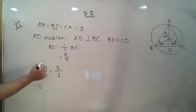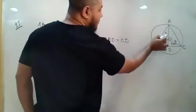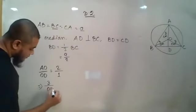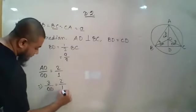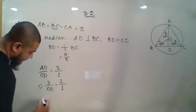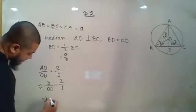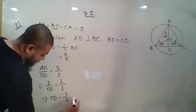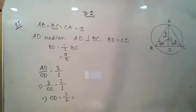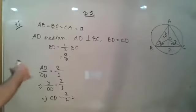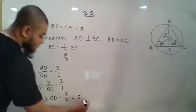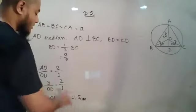We know the length of AO is 3 centimeters. Cross-multiplying gives OD = 3/2, which is 1.5 centimeters.